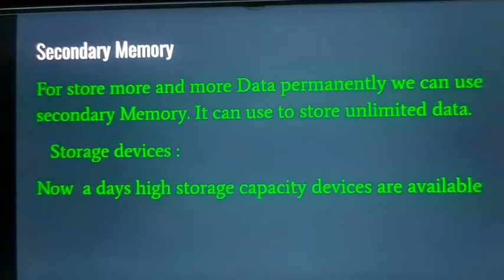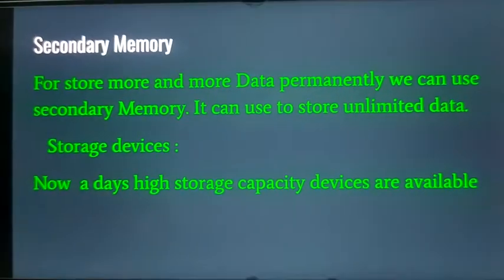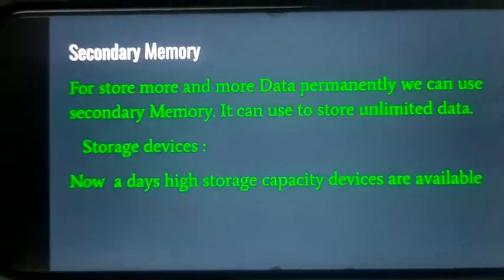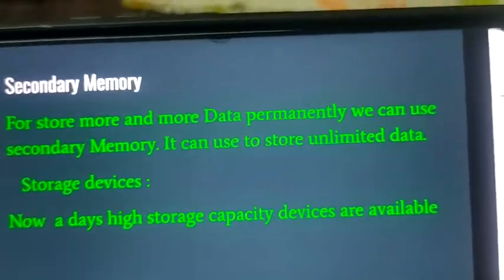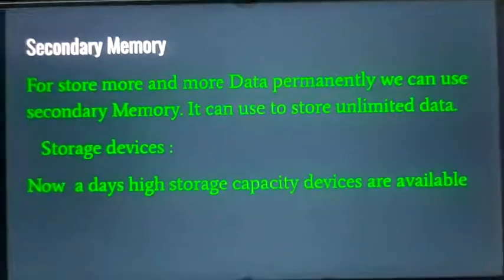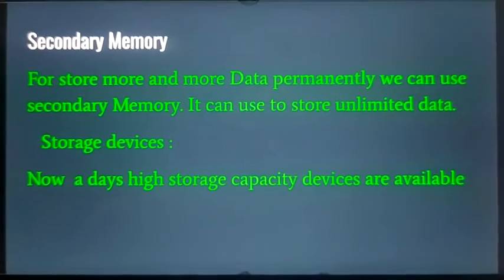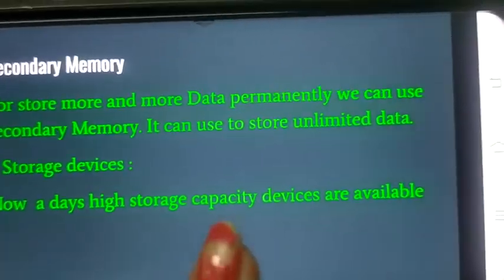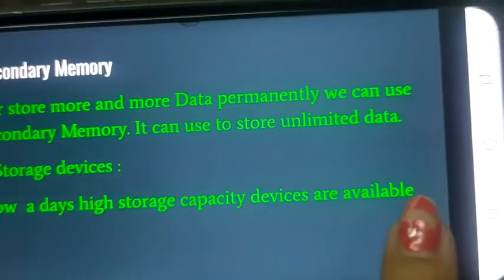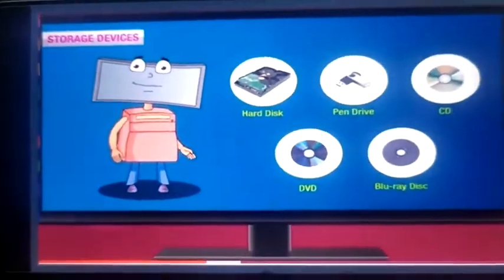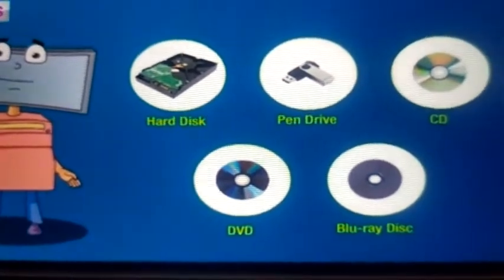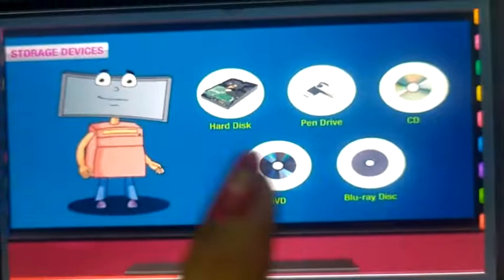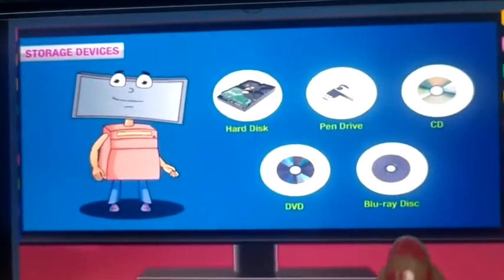What is secondary memory? Secondary memory is used when we want to store data permanently. If we want to store more, unlimited data in a computer, we use secondary memory, because in primary memory data is limited. Nowadays, high storage capacity devices are available in the market. You can see here: hard disk, pen drive, CD, DVD, and Blu-ray disk — these are all storage devices for secondary memory.